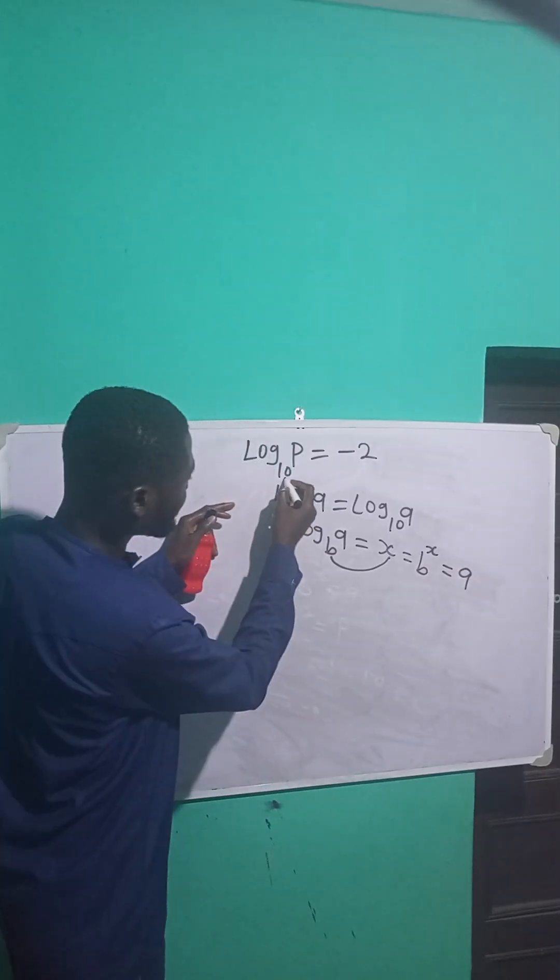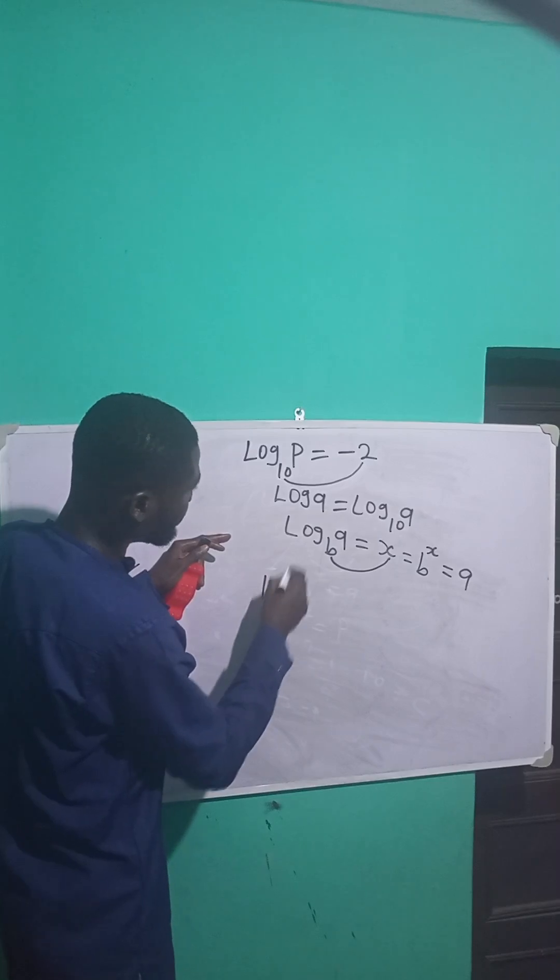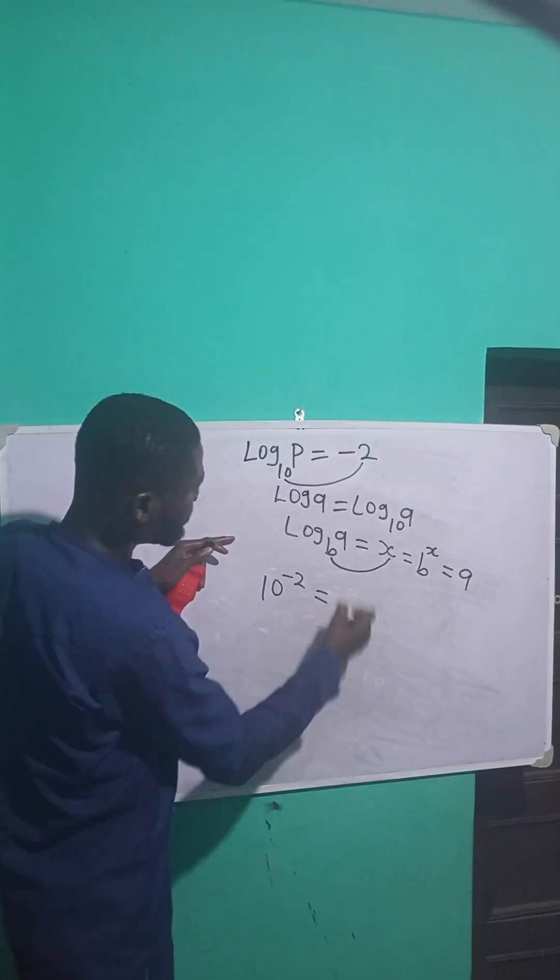So to do that, this 10 here will be raised to the power of this negative 2. So it becomes: 10 raised to the power of minus 2 is equal to P.